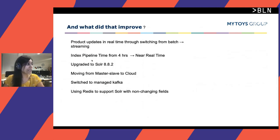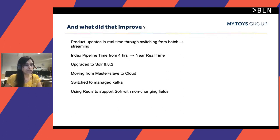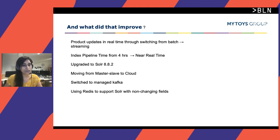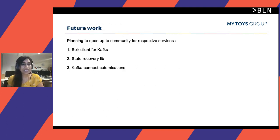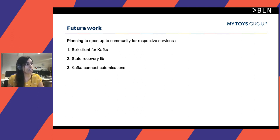As a whole, the transformation allowed us to update products in real time and we got rid of the four-hour index pipeline. We upgraded Solr from version 6 to 8.8.2, moved from master-slave to Solr Cloud, and switched to managed Kafka. We corrected the architectural flaw of serving everything from Solr by now using Redis to handle non-changing fields. Looking ahead, we are planning to open up to the community and are doing an intensive review of the customizations we made to Kafka Connect, the state recovery library, cold bootstrapping, and the Kafka Connect customizations.